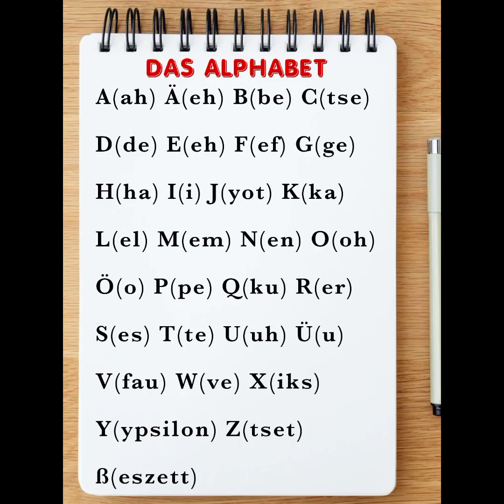Greetings ladies and gentlemen. In this video let's look at the German alphabet. First of all, please note the following: when saying the German alphabet, you are going to maintain the same way you pronounce the English vowels — that is A, E, O, and U — which are pronounced the same way in German.